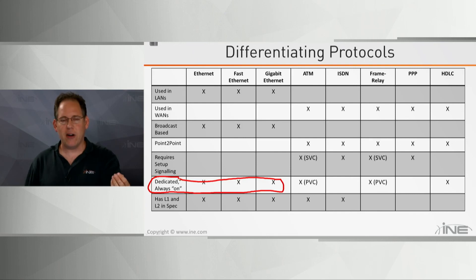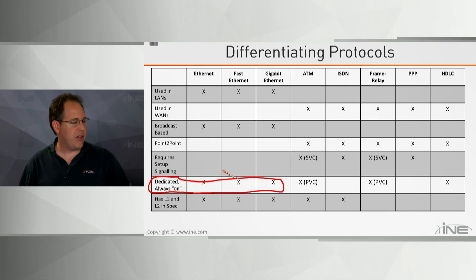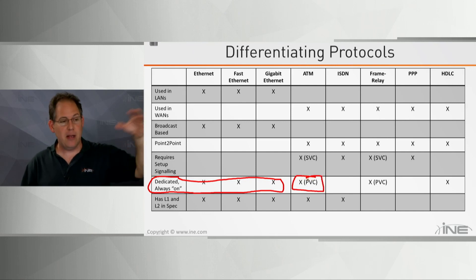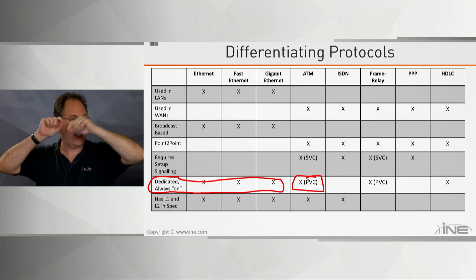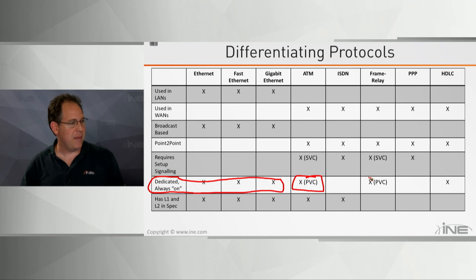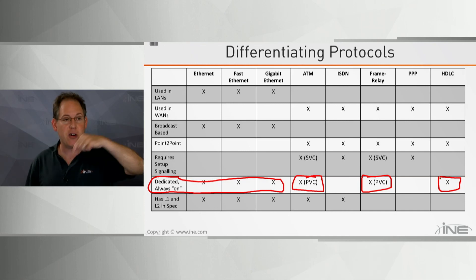All flavors of Ethernet are always-on — when you put an Ethernet frame on the wire you don't have to first signal the wire. The wire is always there and always available. ATM and Frame Relay using permanent virtual circuits (PVCs) — circuits that are always up, like a dedicated line always connecting two devices — are also always on and don't need signaling.